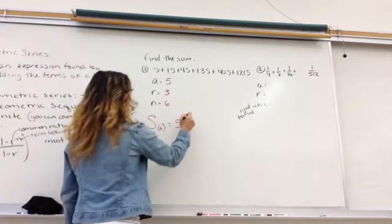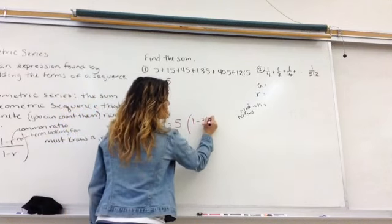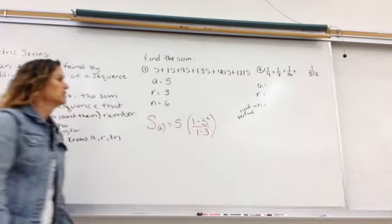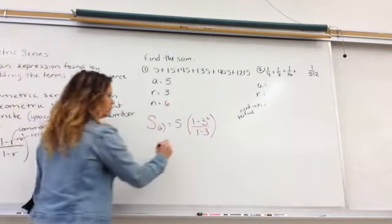It's going to be our first term, A, times 1 minus our common ratio to the 6th term divided by 1 minus the common ratio. From here, it is very simply just math.